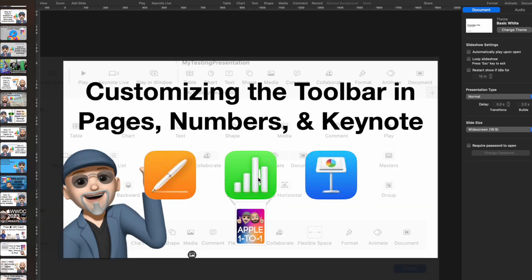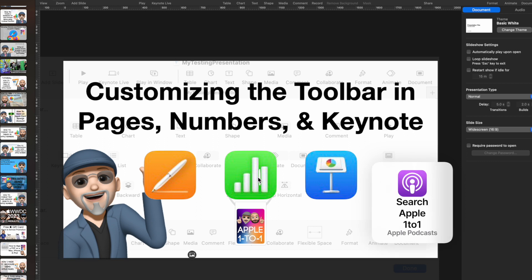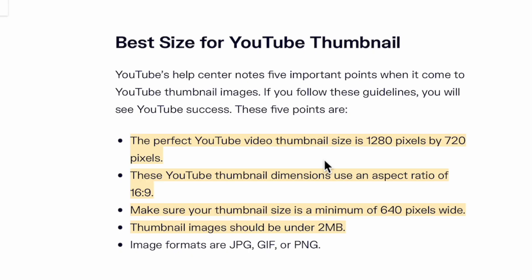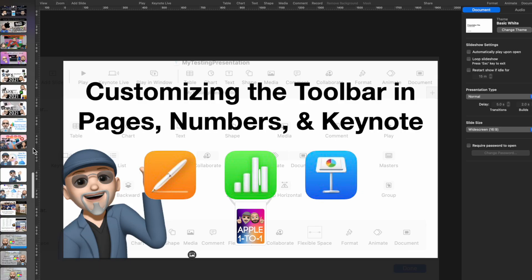We're going to create a brand new Keynote. The first thing I want to talk about is the rules for a thumbnail, because I think it's important. Going to Safari, there's a guideline: they want you to use a thumbnail size of 1280 by 720, which is 16 by 9 widescreen aspect ratio. The minimum width is 640 pixels and the thumbnail image should be under two megabytes.